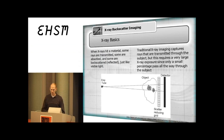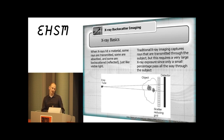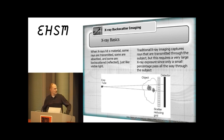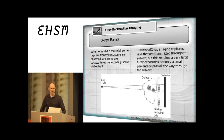I'm always interested in unusual imaging techniques. I built a scanning electron microscope in 2011 and showed it at Maker Faire for two years. I thought it was interesting to image things with electrons, so why not image things with x-rays? The traditional way to take an x-ray is to get an x-ray source — an x-ray tube — and shine the x-rays through an object so they create a shadow on the detector.